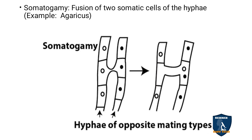Somatogamy: the fusion of two somatic cells of the hyphae, where gametes are not involved — the somatic body cells fuse. Two nuclei from the body cells fuse, and that type is called somatogamy. The fusion of two body cells of the hyphae is called somatogamy. Example: Agaricus, which is the mushroom.